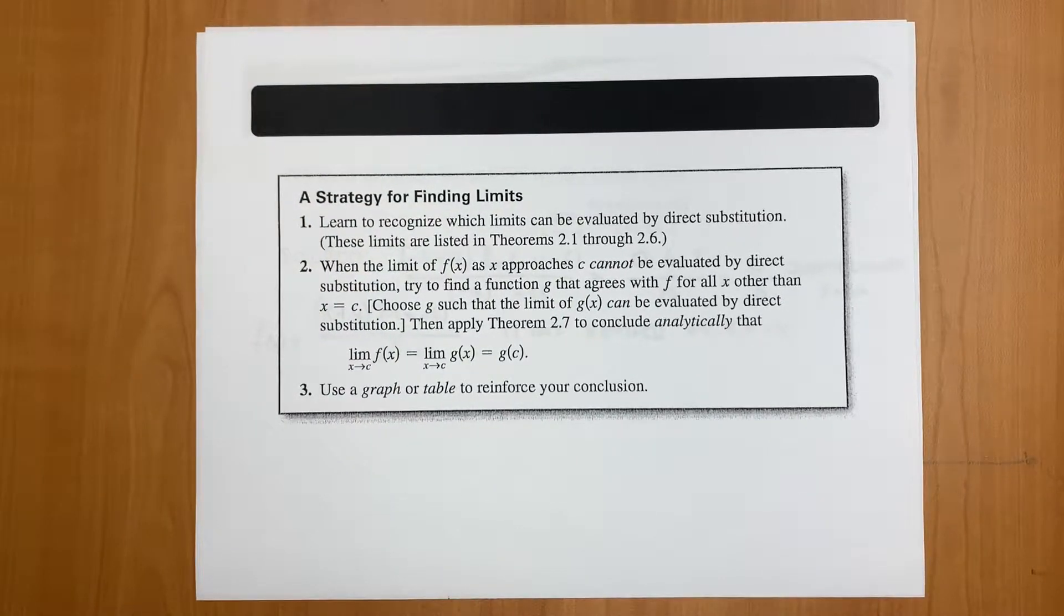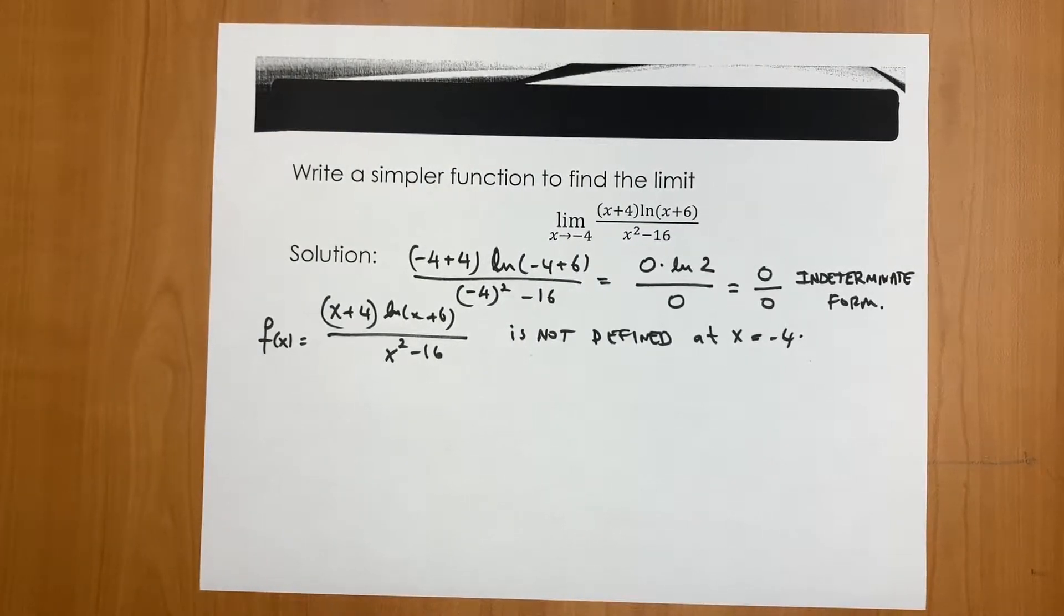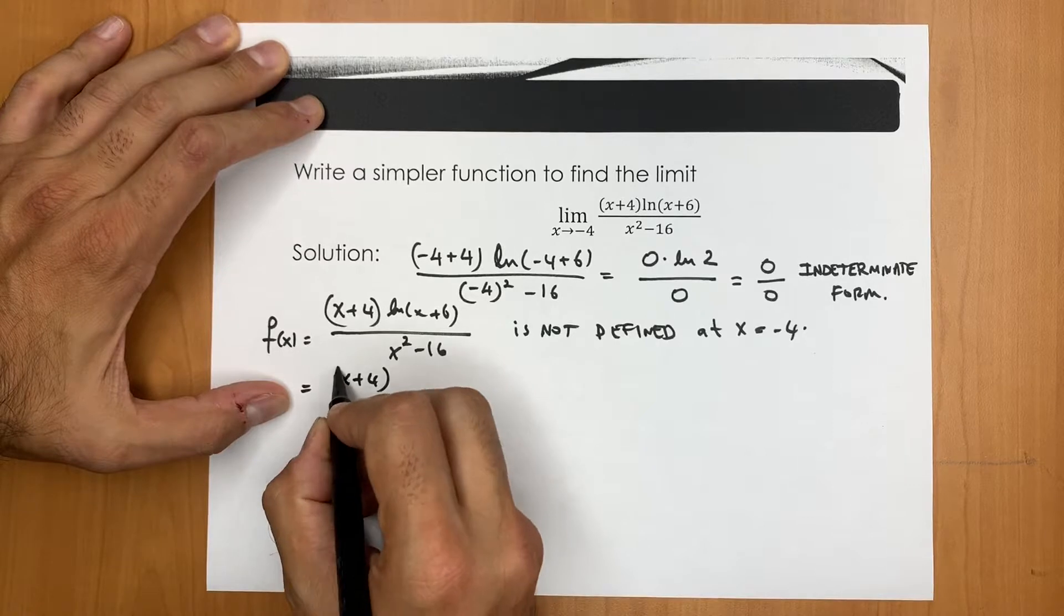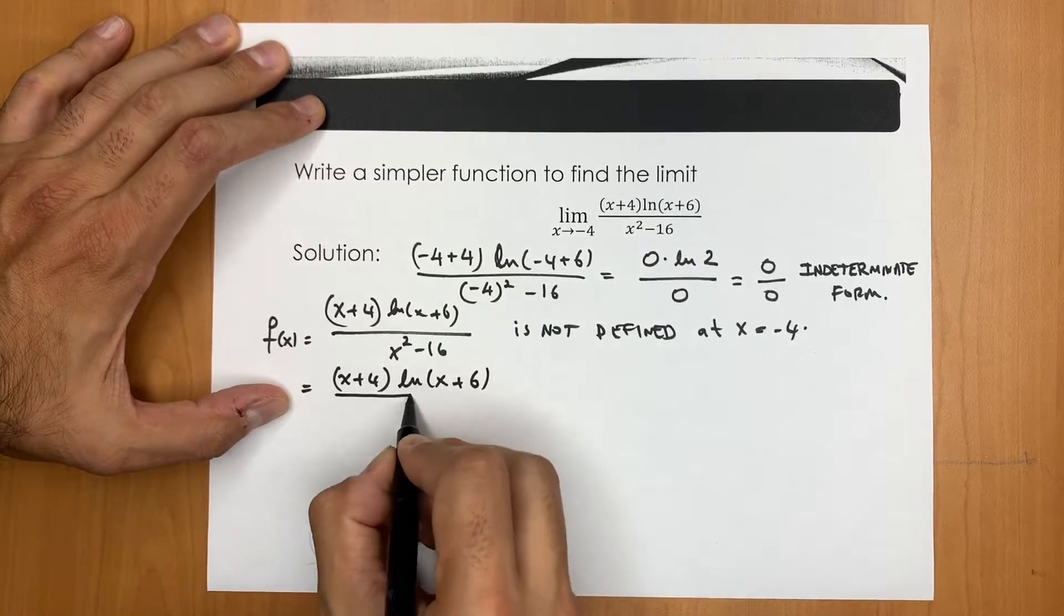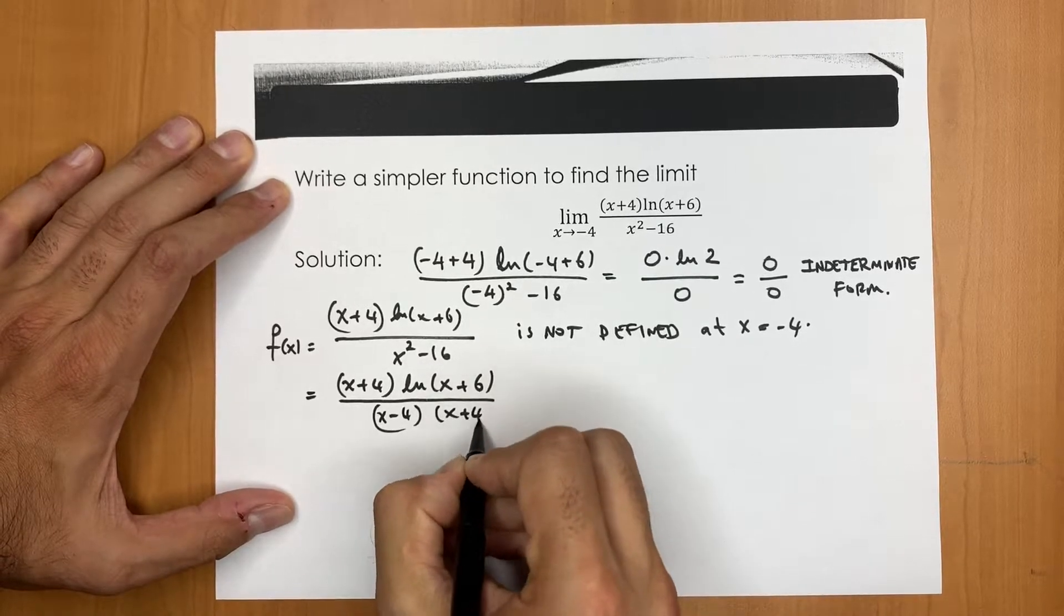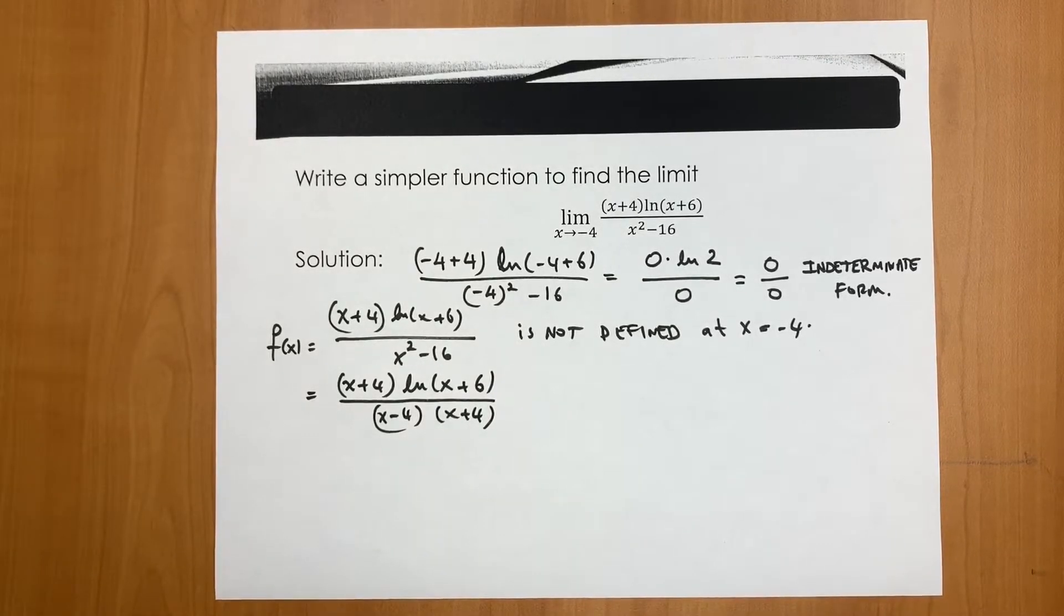So we jump into the second item, which essentially says can you come up with another function for which that function is exactly the same as f but not at x equals -4. So the function is a rational function and you have a logarithmic part at the top together with the linear part x+4 and in the bottom you have a quadratic. So at this moment we can investigate if we can use the dividing out technique. So to do that we have to rewrite this expression, especially the bottom because the bottom of this function can be factored into (x-4)(x+4). This is us using algebra factoring out this polynomial x²-16.